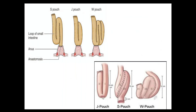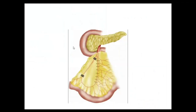The standard J-pouch involves a 15 to 20 centimeter side-to-side anastomosis of the two limbs, with the apex anastomosed to the rectum or anal canal. When considering an S or W pouch, it is because the J-pouch does not reach the pelvic floor. To bring the J-pouch to the pelvic floor, certain maneuvers are required: releasing the peritoneum, mesentery leaflets anteriorly and posteriorly, scoring through the mesentery, and considering division of the terminal ileocolic artery at its base while preserving the arcade.